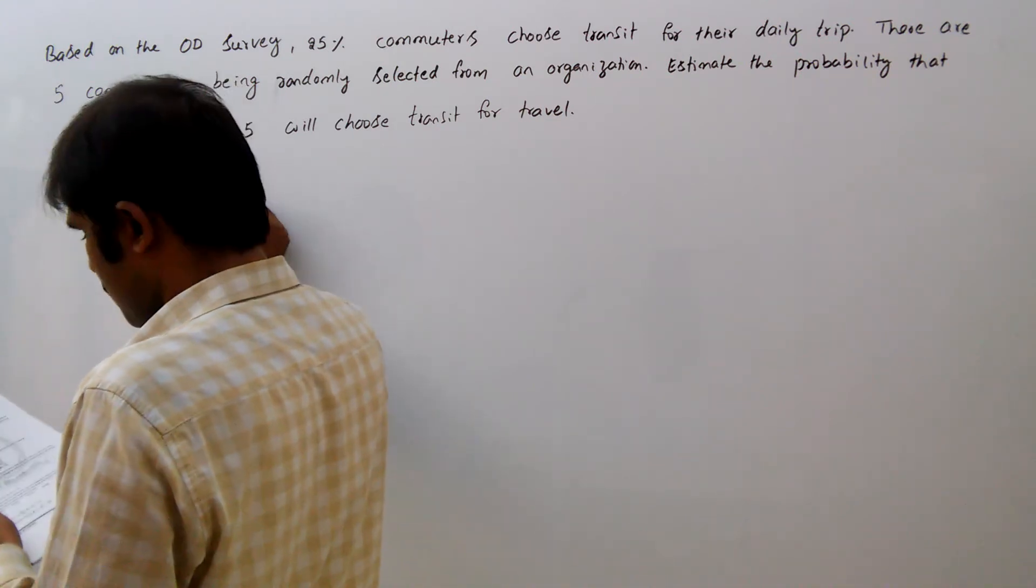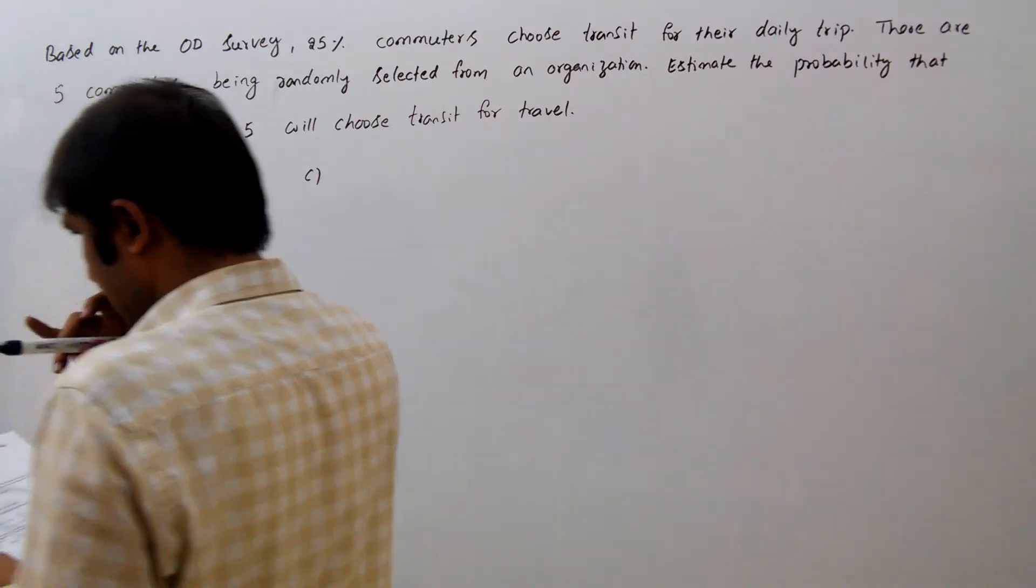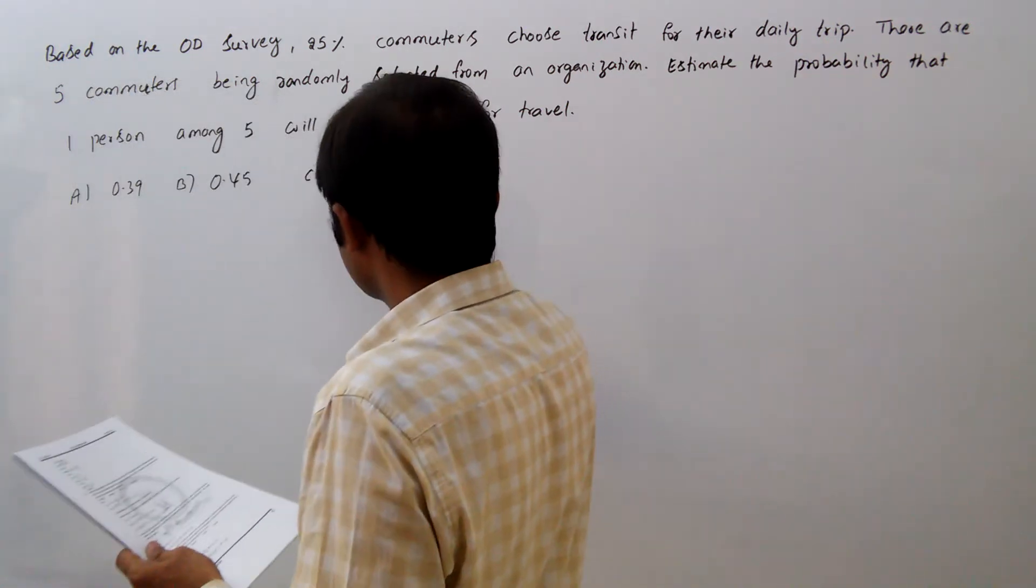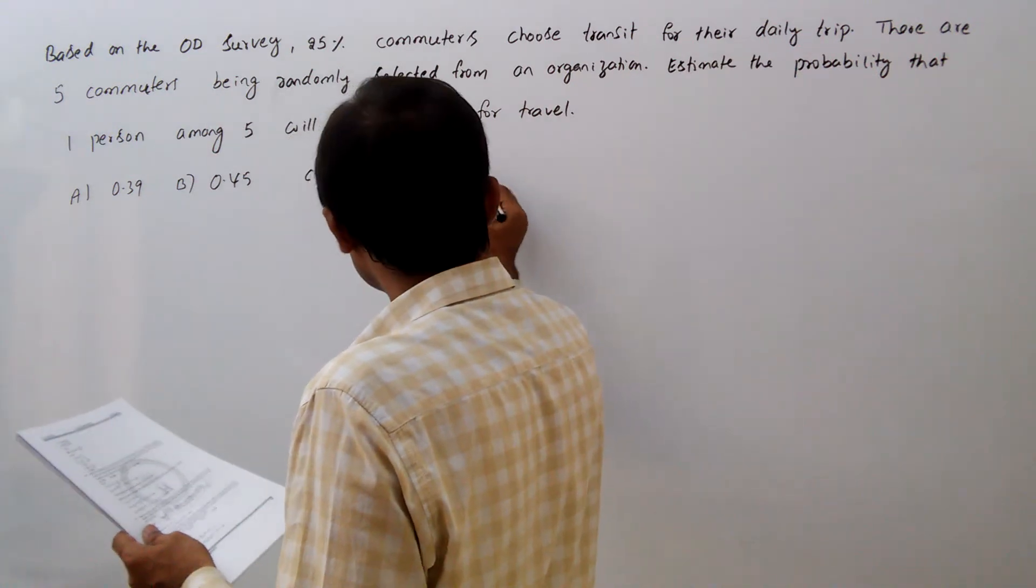Option A: 0.39, Option B: 0.45, Option C: 0.77, Option D: 0.66.